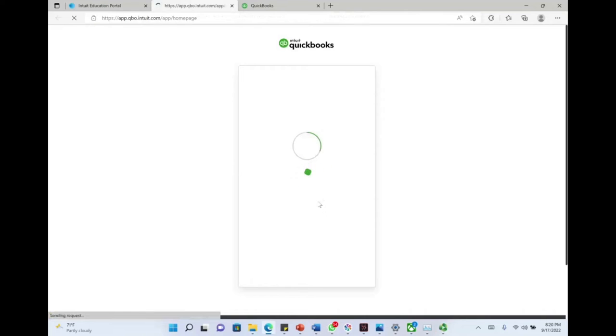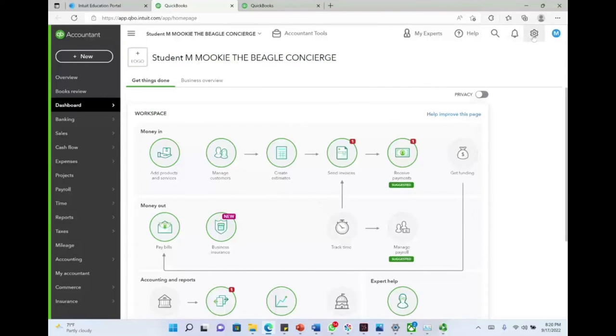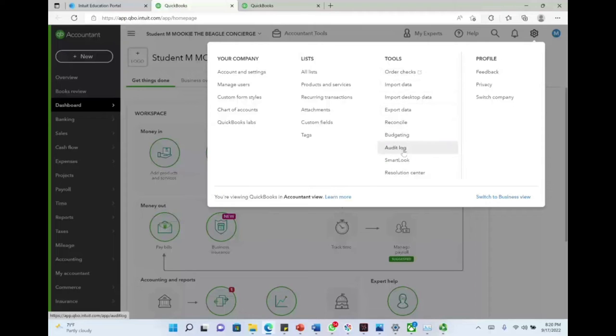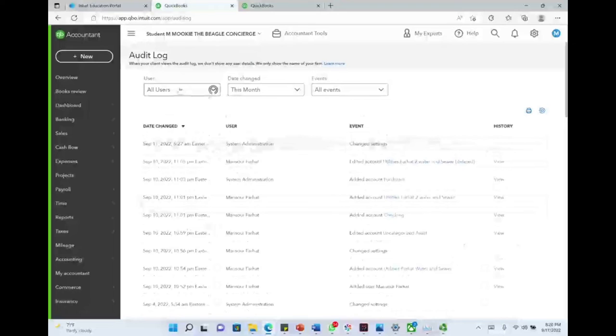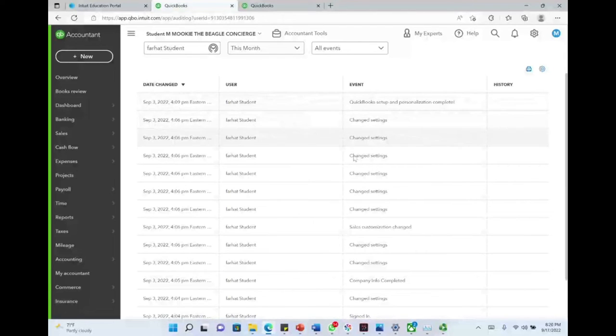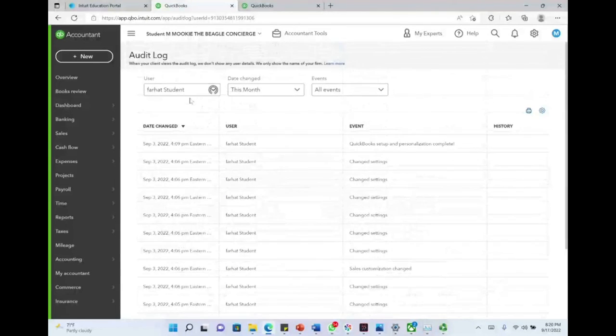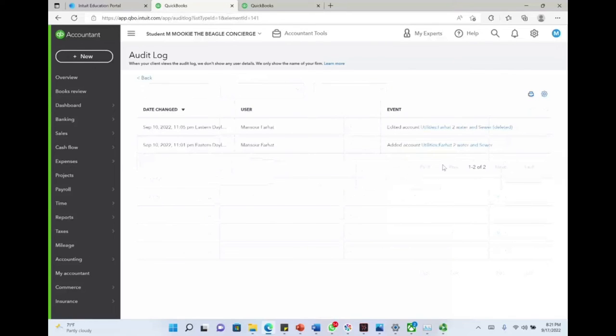What I'm going to show you now is how to review an access log. Most accounting information systems will have a log, a transaction log. I'm going to click here on the gear. Let's assume Farhat is my student. I'm the teacher, or if I'm the manager, Farhat is one of my employees. I can go to their audit log, and I would know exactly what Farhat did. For example, here, user Farhat as a student - I know they changed their settings September 3rd at 4:09. I would know exactly what they did. Or let me take a look at Mansour Farhat, what he did. I can see at September 10th, 11:01 PM, he added an account called Utilities, Farhat 2, Water and Utilities. I can see the history - what Farhat did, what time, when, and so forth. This is a transaction log. This is important.